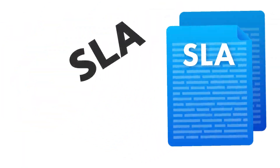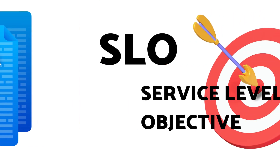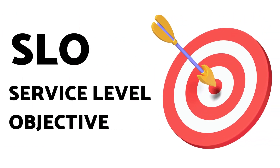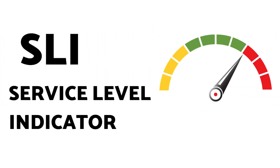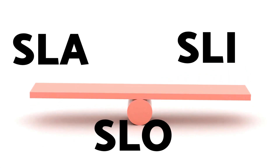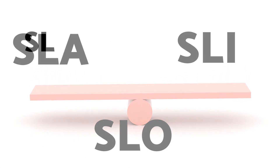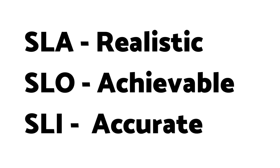Just for a recap: SLA is Service Level Agreement, SLO is Service Level Objective, and SLI is Service Level Indicator. It's crucial to balance these three — your SLA should be realistic, your SLO achievable, and your SLI should accurately reflect performance. This balance ensures customer satisfaction and service efficiency.